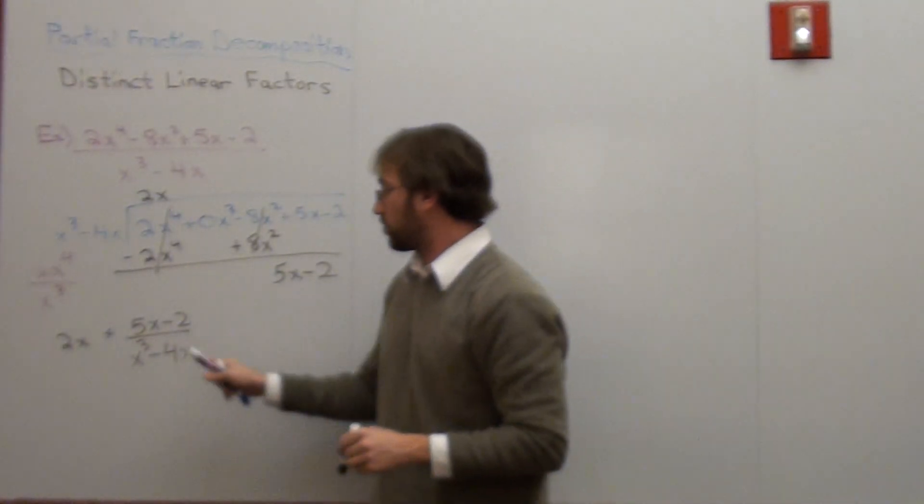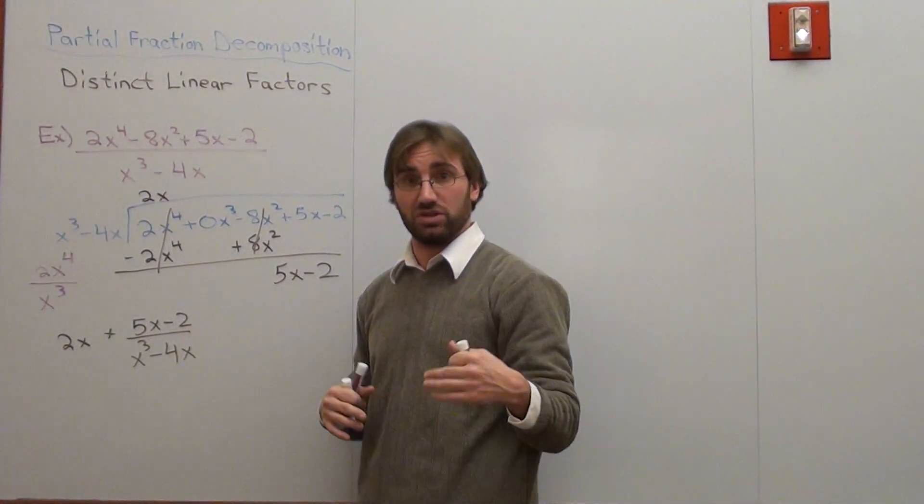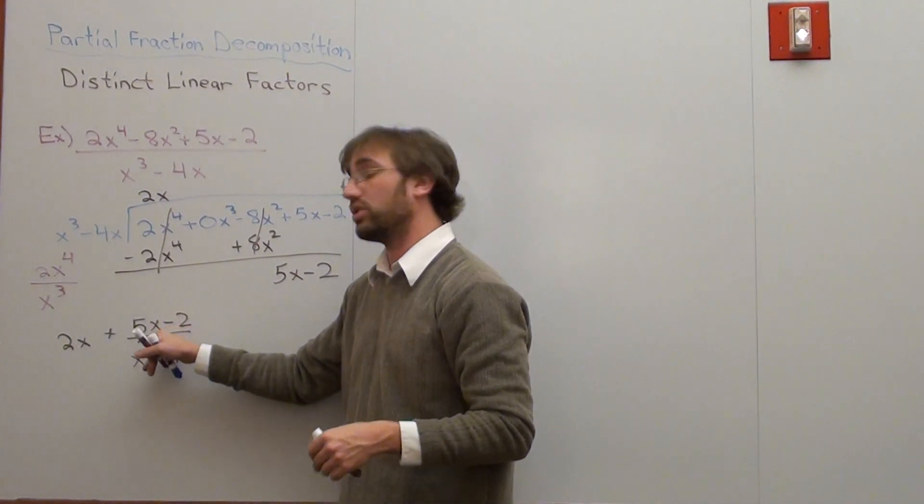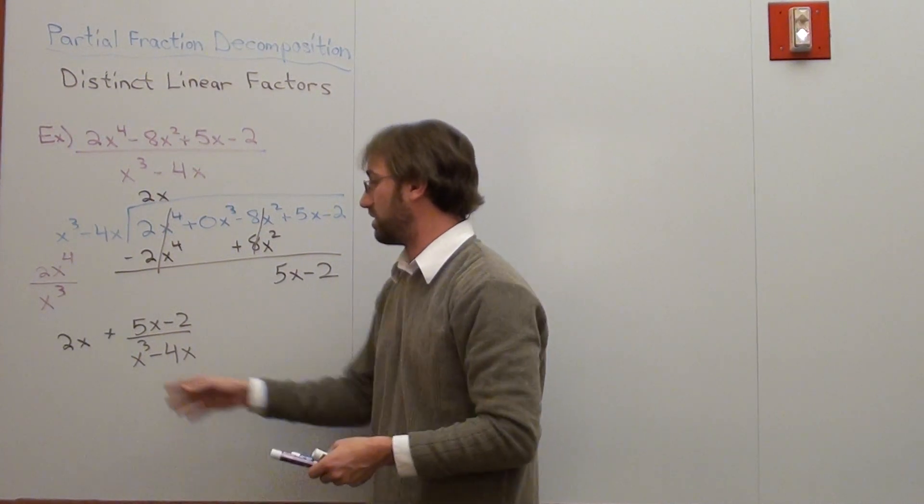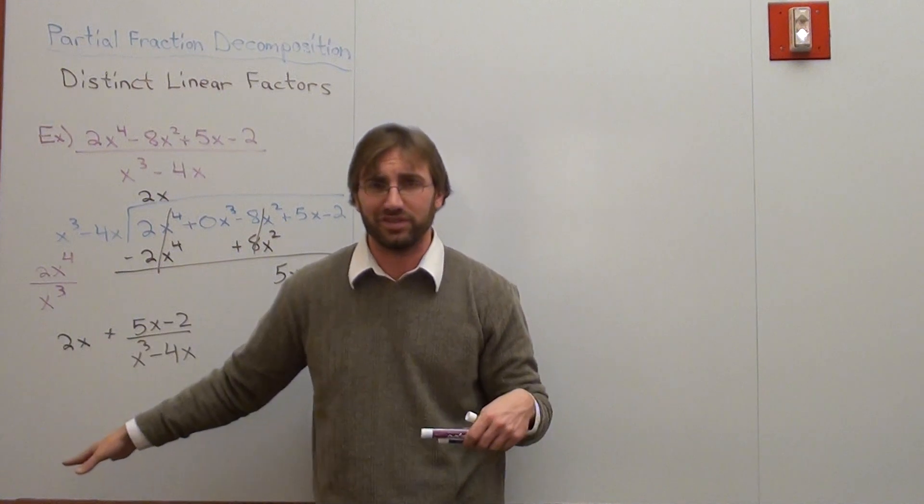What we're going to do is try to figure this out now. Now it fits into the scheme of what we're doing. The degree of the numerator is smaller than the degree of the denominator. So now we're going to use partial fraction decomposition. We don't have to worry about the 2x.